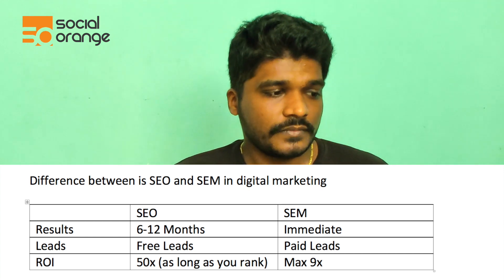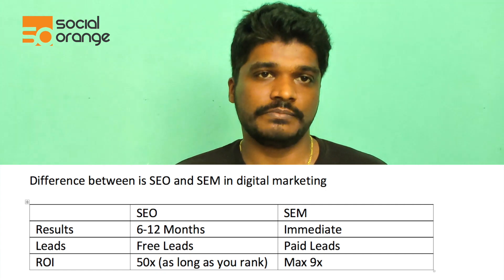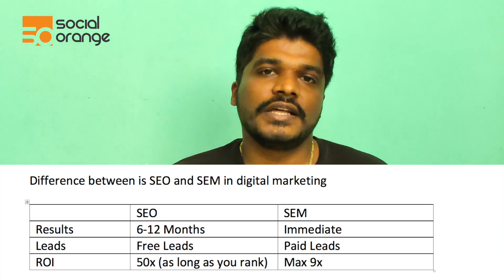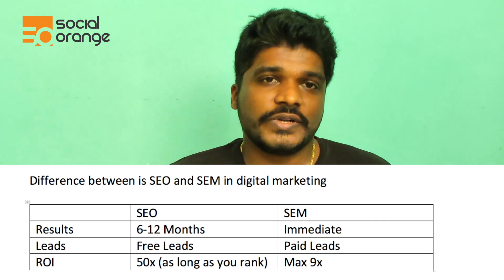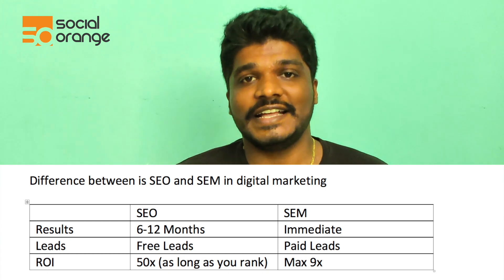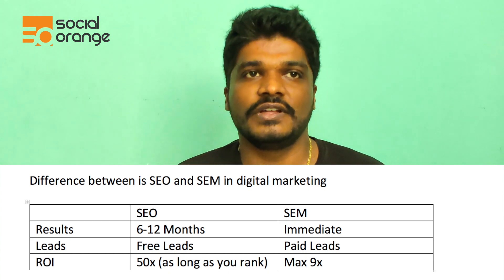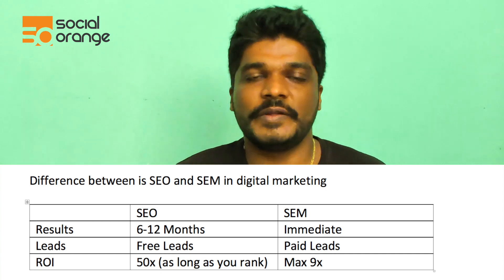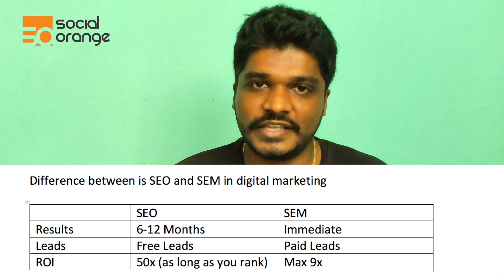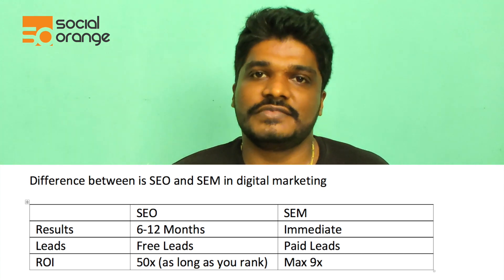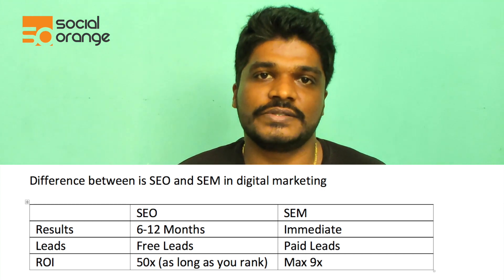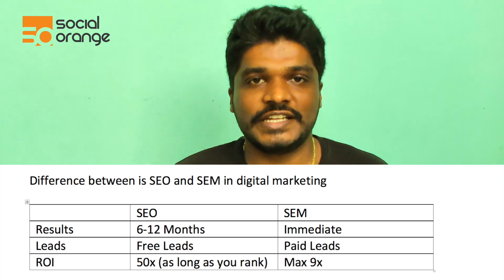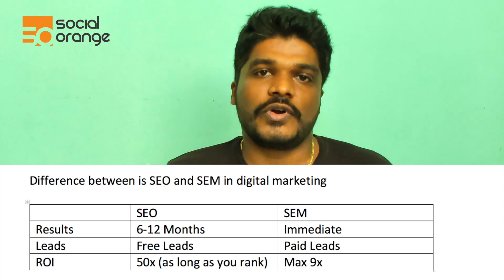In terms of ROI, an SEM campaign might give you around 10x to 15x ROI depending on your product and sales cycle. But an SEO campaign can give you 50x to 100x ROI — as long as your content ranks, you'll keep getting leads. For example, if you hire a content writer, optimize a blog page, and it ranks for a particular keyword, you might get 100 leads per year from that page continuously. That kind of compounding return puts your SEO ROI at around 50x, which is very significant.